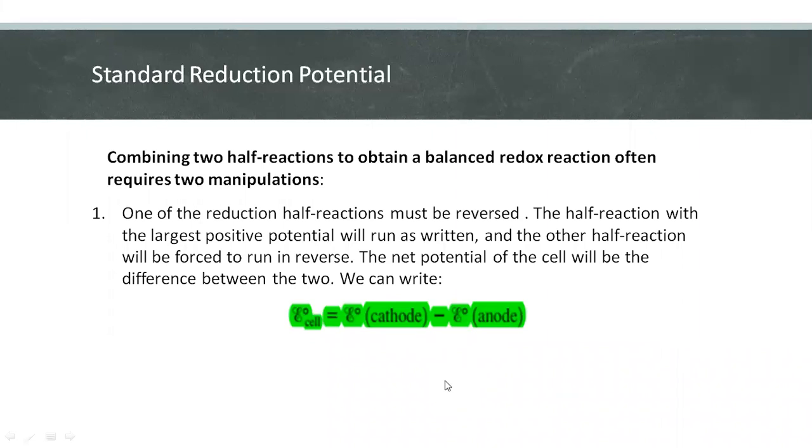By combining two half-reactions that are listed in the table to obtain a balanced redox reaction often requires two manipulations. The first one is one of the reduction half-reactions must be reversed since redox reaction must involve a substance being oxidized and a substance being reduced. The half-reaction with the largest positive potential will run as written, or as a reduction. And the other half-reaction will be forced to run in reverse, will be the oxidation reaction. The net potential of the cell will be the difference between the two.